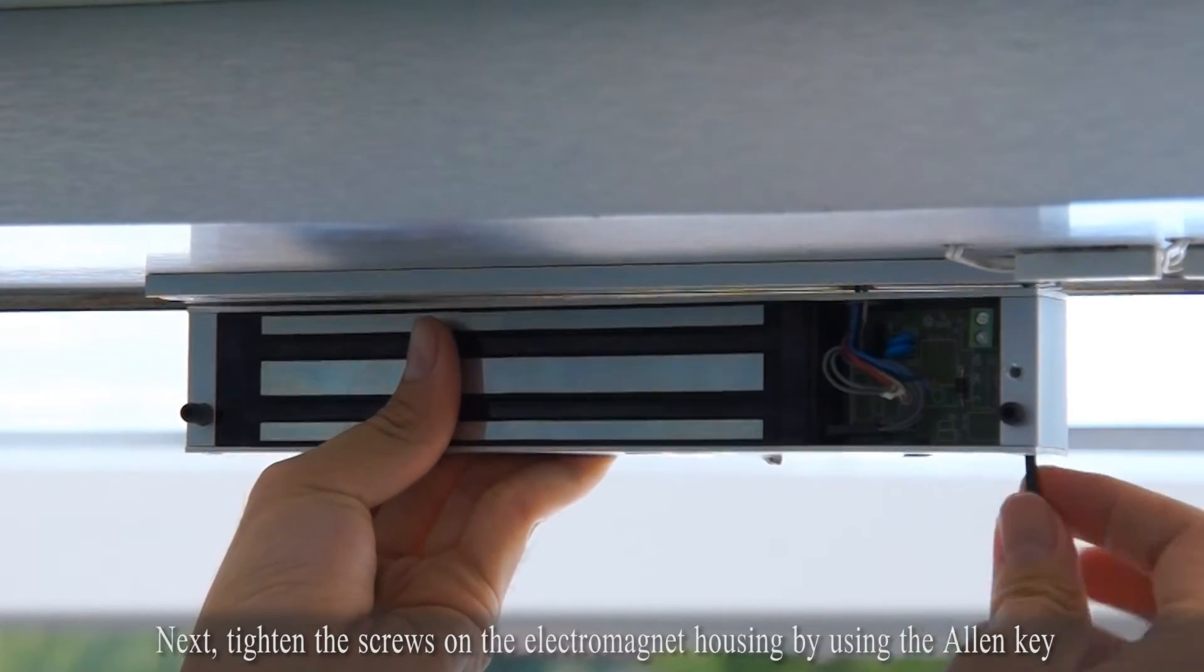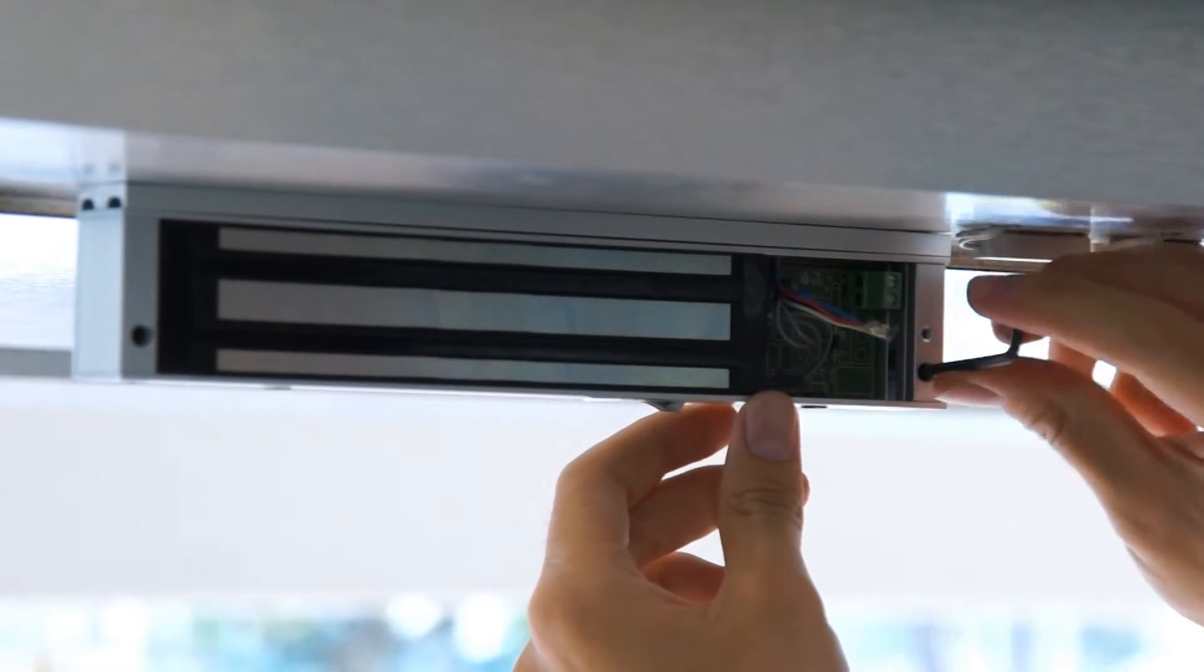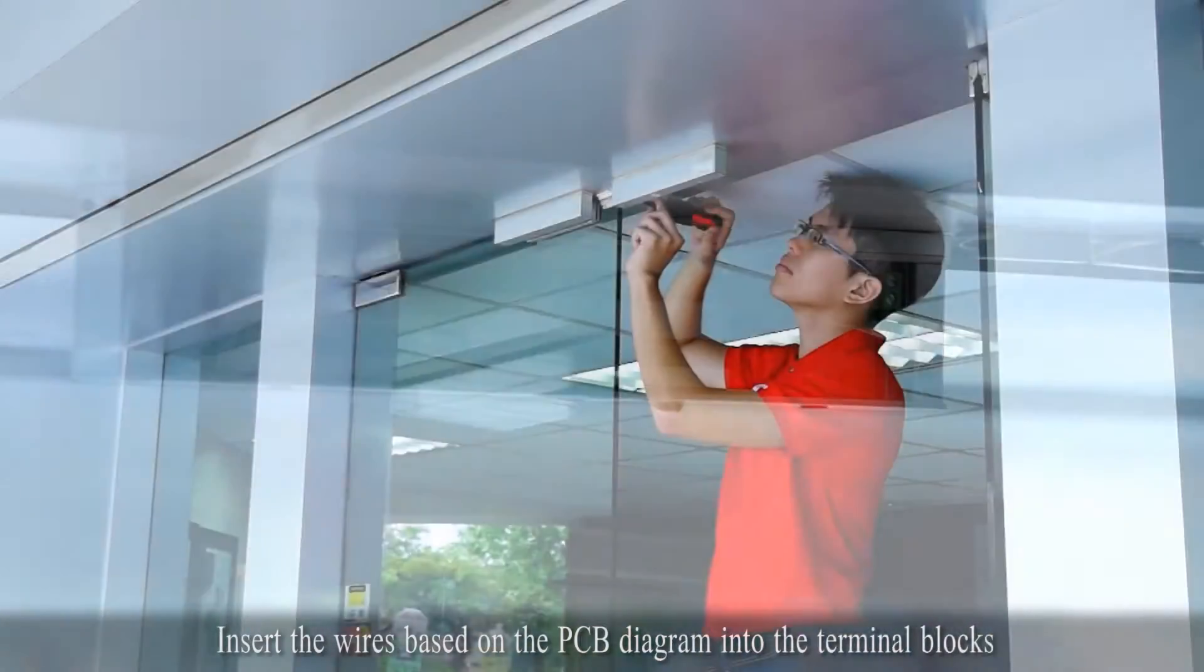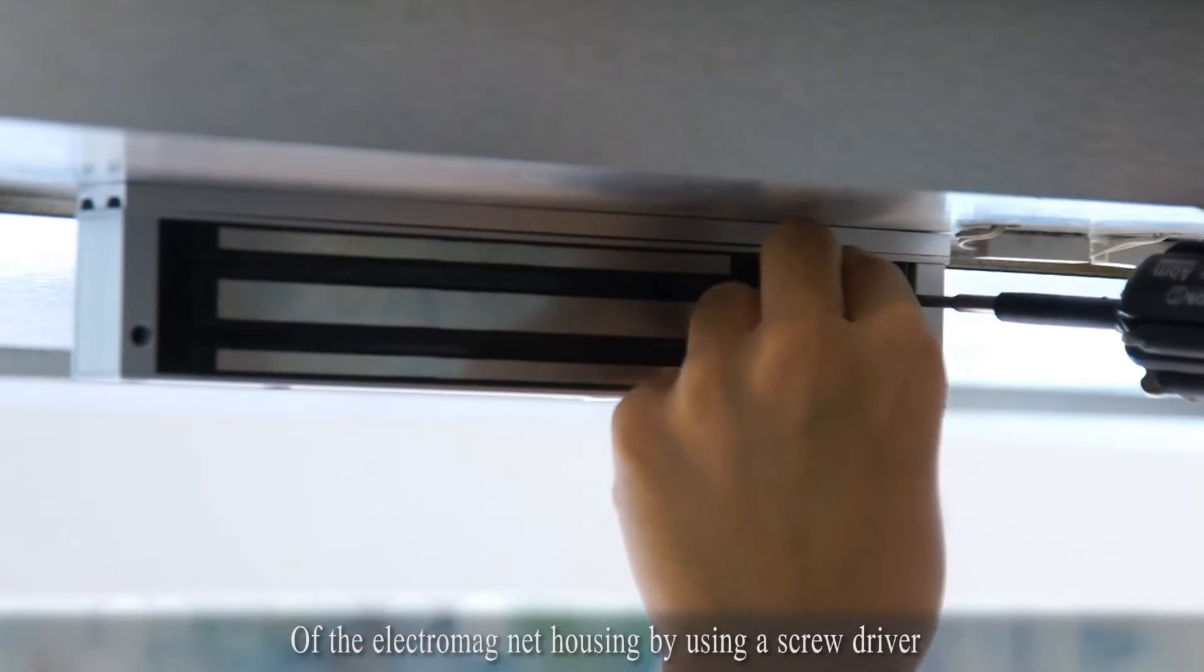Next, tighten the screws on the electromagnet housing by using the Allen key. Insert the wires based on the PCB diagram into the terminal blocks of the electromagnet housing by using a screwdriver.